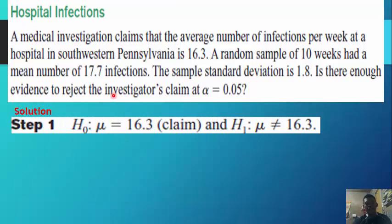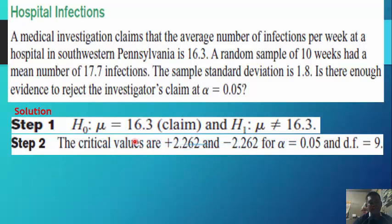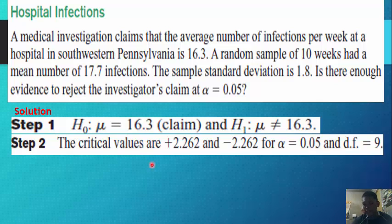Step 1: State the null hypothesis H₀: μ = 16.3 and the alternative hypothesis H₁: μ ≠ 16.3. Step 2: The critical values are positive 2.262 and negative 2.262 for an alpha of 0.05 and degrees of freedom of 9.